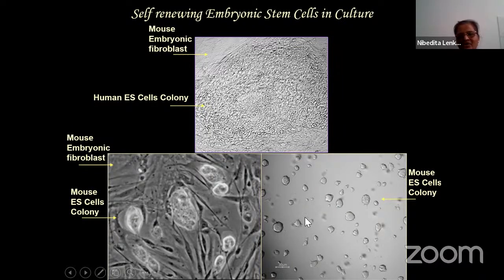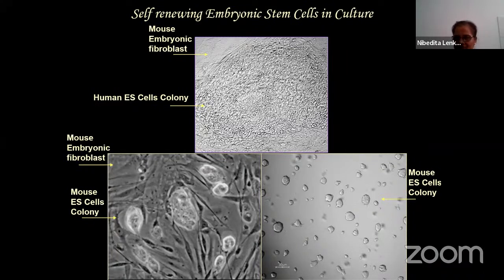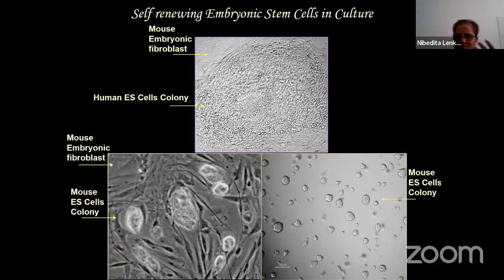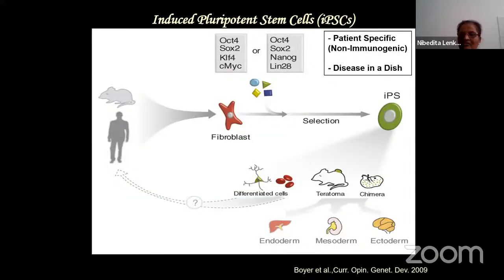Culturing cells requires providing a nutrient broth and manipulating conditions in vitro under artificial conditions - similar to how we need protein, fat, carbohydrates, and nutrients for our growth. We provide an energy source, growth factors, specific proteins, and carbohydrates for the cells to grow. This is how we maintain the cells.